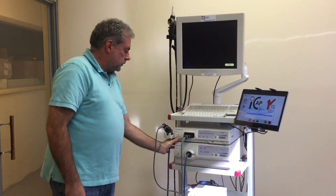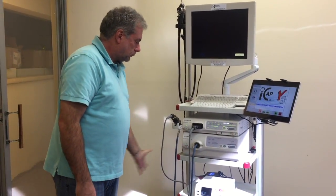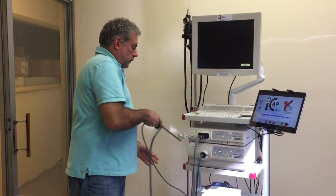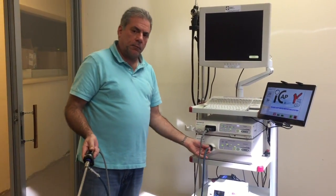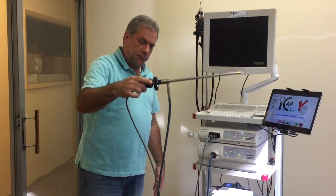So basically you just turn the system on, you have the camera head plugged into the video processor and the light guide cable plugged into the light source. Very simple setup for rigid.